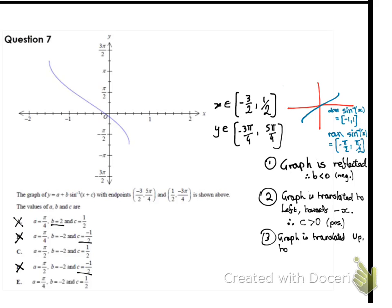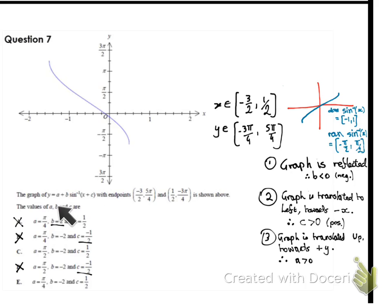Now let's consider the third situation: the graph is translated upwards. From a normal standard graph centred in the y-direction, the centre has moved up some units — a translation vertically up in the positive y direction. This means the a-value, which is added to the inverse sine function, must also be positive. Looking at the remaining options C and E, the a-value in both cases appears positive, so that's not conclusive — it's 50-50.